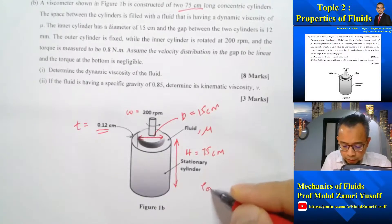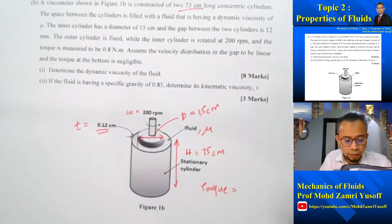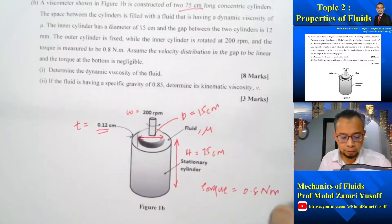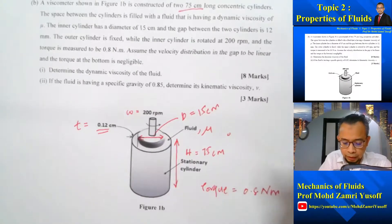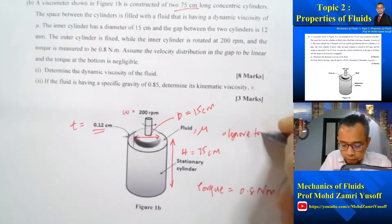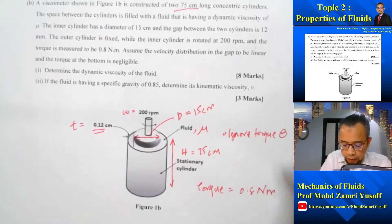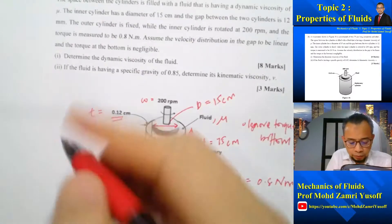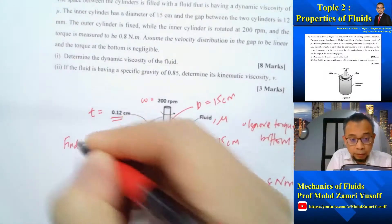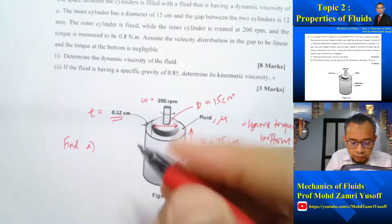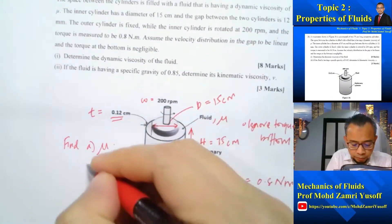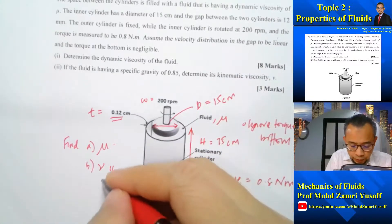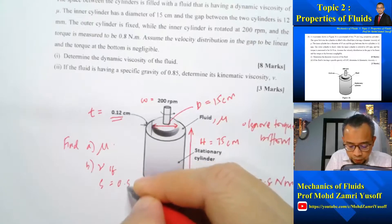The outer cylinder is fixed while the inner cylinder is rotated. So omega is equal to 200 rpm and the torque is given as 0.8 Nm. Ignore torque at bottom. So we are asked to find first mu, and part b, nu, if S is equal to 0.85.